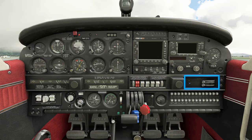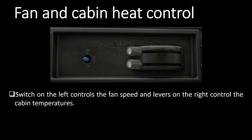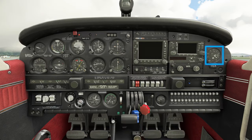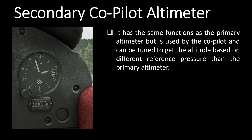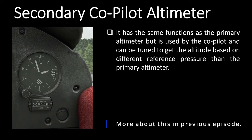Above the circuit breakers is the fan control switch and the cabin temperature control. This doesn't matter much in the sim, but in the real world you can turn on the fans and control the cabin temperatures with these levers, similar to what you would have in your cars. Above that there is an alternate altimeter. We've talked about this in the pitot-static systems episode. It has the same functions as the primary altimeter but can be used by the co-pilot and can be tuned to a different reference pressure. So you can have your primary altimeter tuned to QFE while the alternate altimeter is tuned to QNE to give you the pressure altitude.